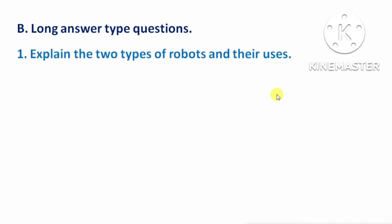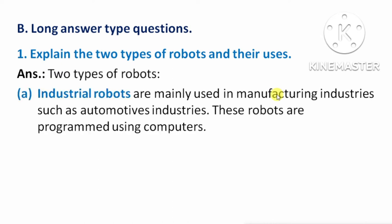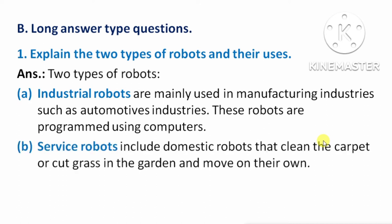Long answer type questions. First question: explain the two types of robots and their uses. First is Industrial Robots: industrial robots are mainly used in manufacturing industries such as the automotive industry. These robots are programmed using computers — इन robots को computer का प्रयोग करके program किया जाता है। Second is Service Robots: service robots include domestic robots that clean the carpet or cut grass in the garden and move on their own — जो carpet को clean कर सकते हैं, garden के grass को cut कर सकते हैं और खुद चल सकते हैं।